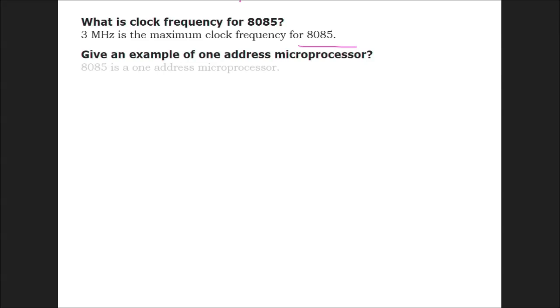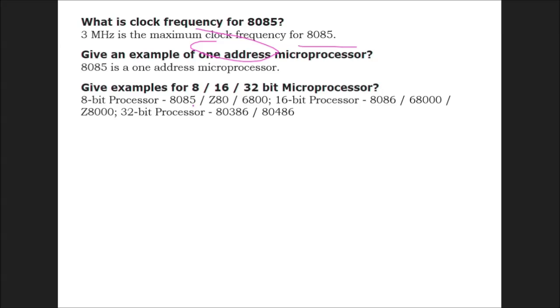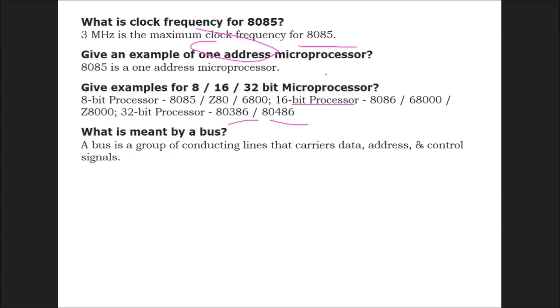Give an example of one address microprocessor: 8085 is one address microprocessor. Give examples of 8, 16, and 32-bit microprocessors: 8-bit: 8085; 16-bit: 8086, 68000, 80186; 32-bit: 80386 and 80486. What is meant by a bus? A bus is a group of conducting lines that carries data, addresses, and control signals.